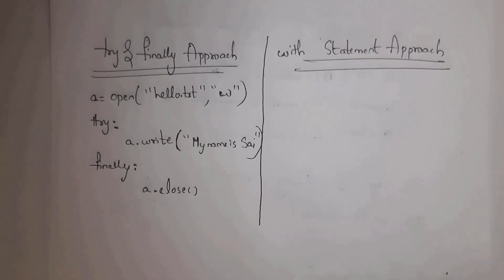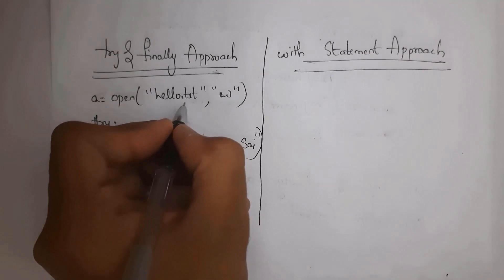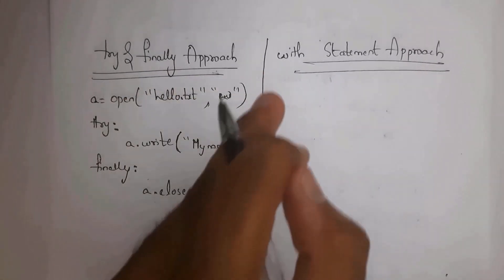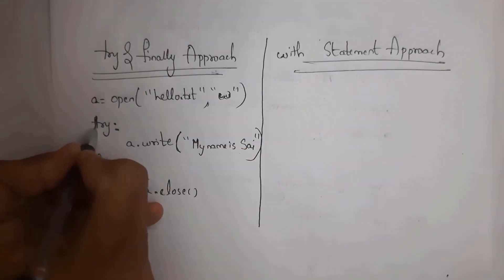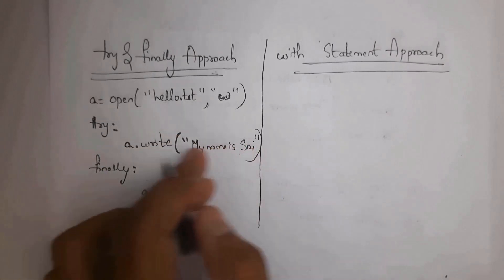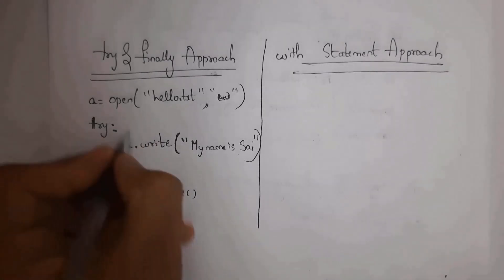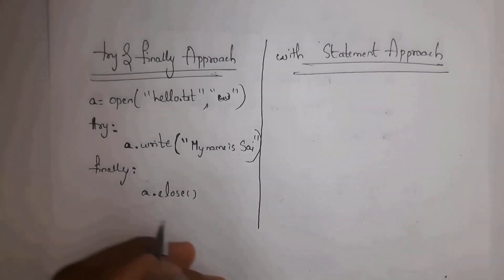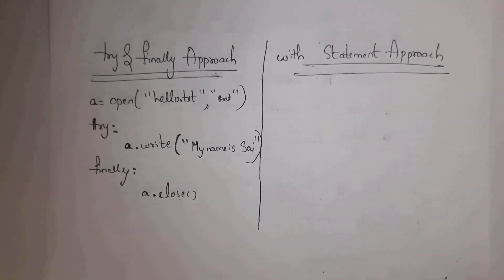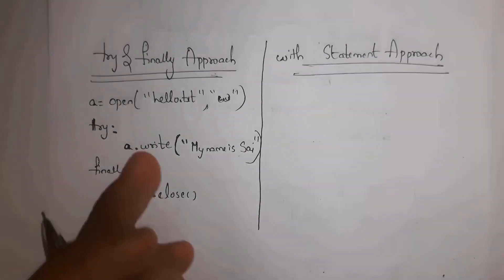First I will explain the try/finally approach. I write: a = open('hello.txt', 'w'). Then inside a try block I write: a.write('my name is saai'). Whenever you run this line it will add that text into hello.txt. Inside the finally block I write a.close(). Though there is an exception or not, the finally block is always executed.